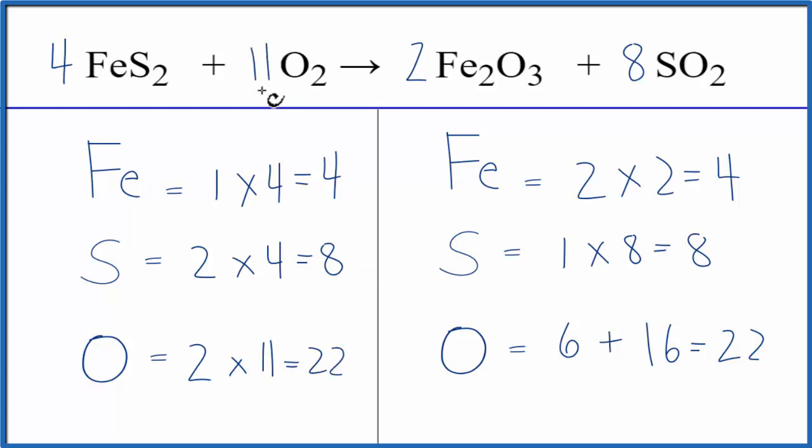Again, this equation is balanced. So the strategy here really was to get an even number of oxygens, and then since oxygen was alone, just wait until the end to finally balance it. Things just seem to work out.